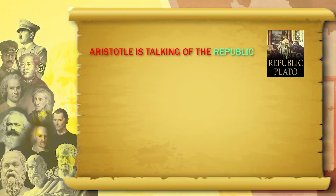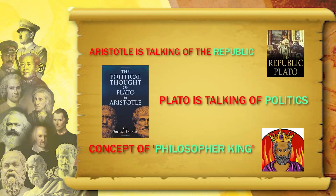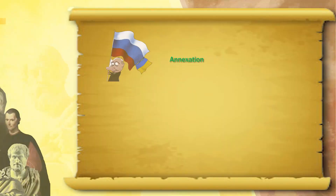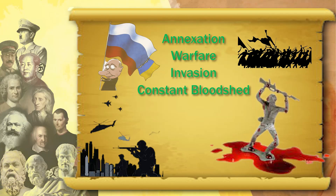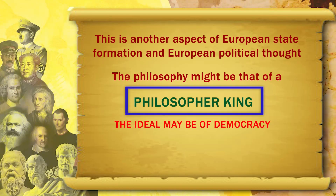There is a caveat. If Aristotle is talking of the Republic and Plato is talking of politics, and they speak of the concept of the philosopher king, then one of the examples of the philosopher king is Alexander the Great — who took on a campaign of massive annexation, warfare, invasion, and constant bloodshed, arson and violence. The philosophy might be that of a philosopher king, but ultimately what Europe comes out with as an example is something like Alexander. This is another dichotomy or contradiction in European political thought — the theory might be good, but Europe never succeeds in giving a good example of the theories that it sets.